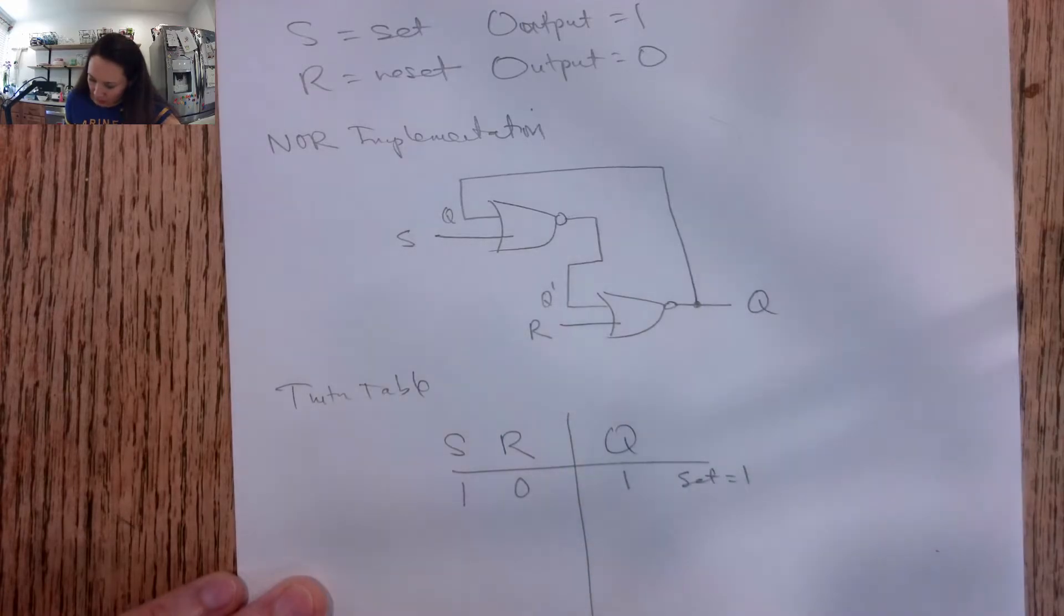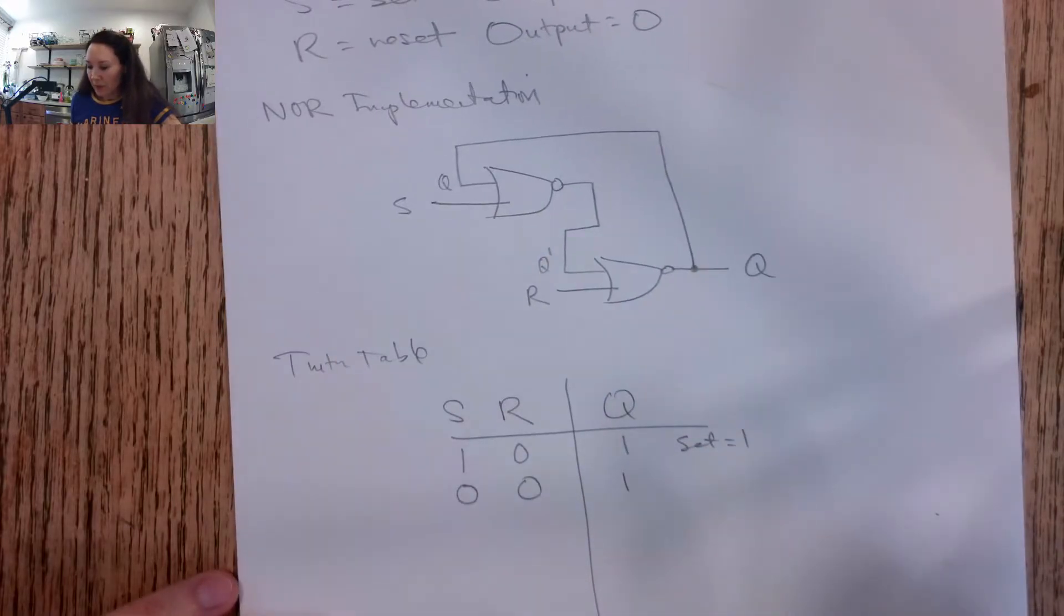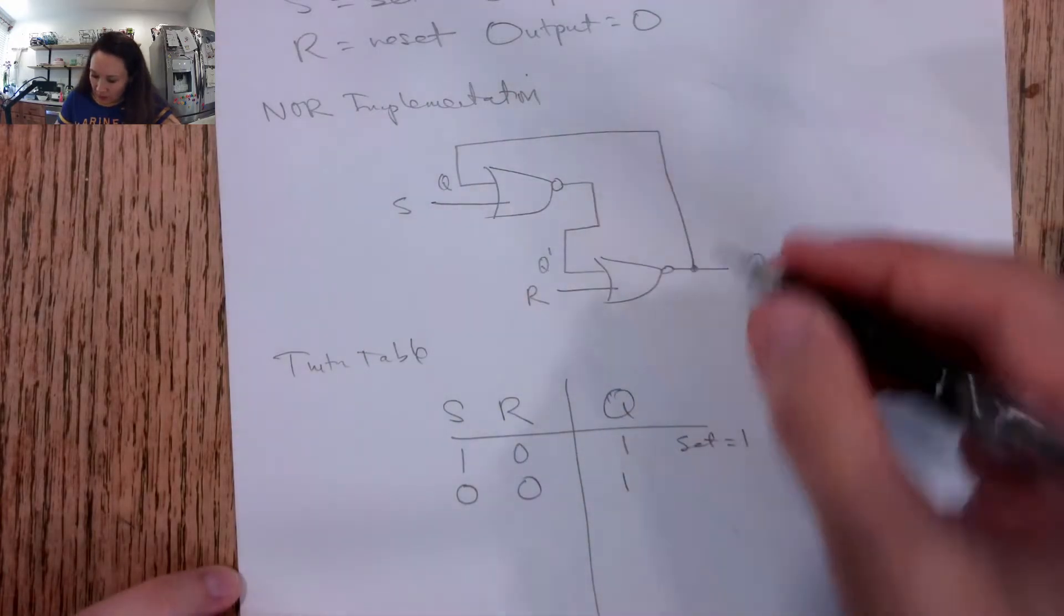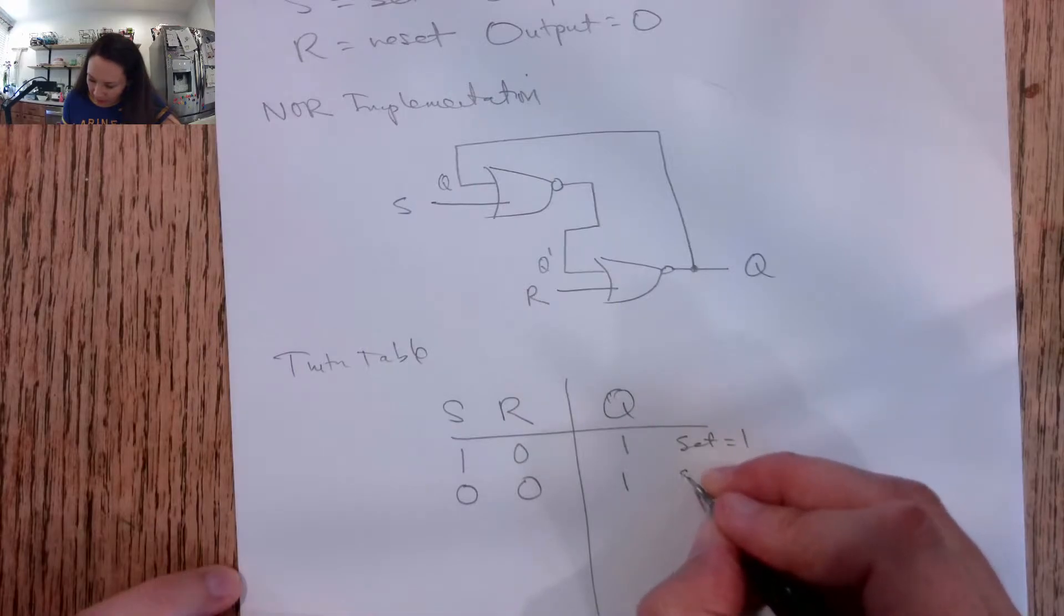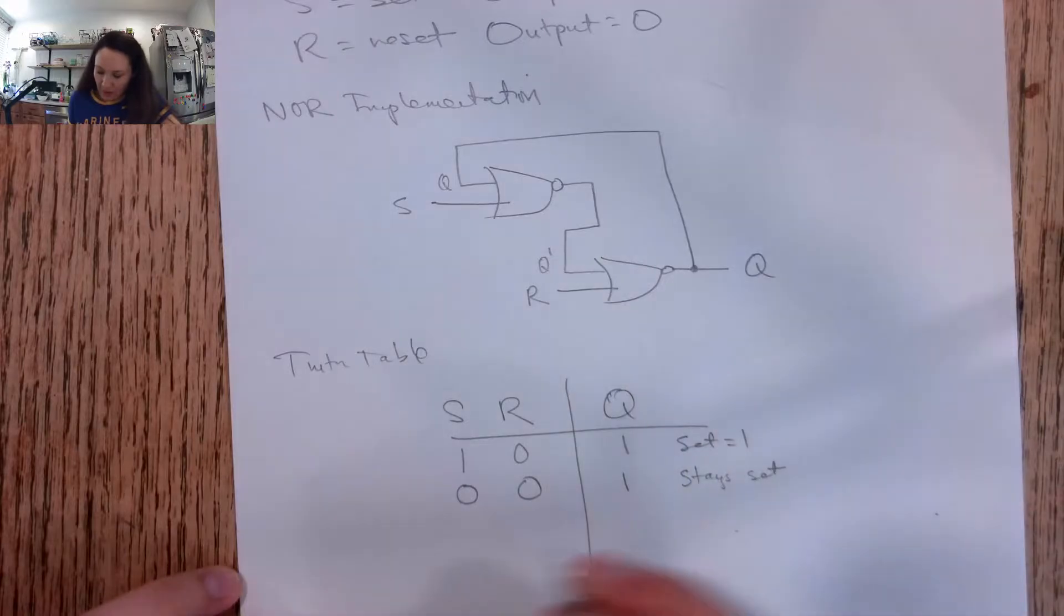So this is set equals 1. And then even if our set goes to 0, a 1 is still going to be set on the output. So you can think of it as the 1 gets latched inside of this memory device. So this stays set.